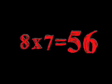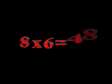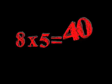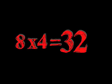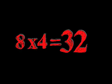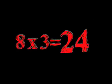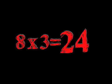Eight times nine is seventy-two. Eight times eight is sixty-four. Eight times seven is fifty-six. Eight times six is forty-eight. Eight times five is forty. Eight times four is thirty-two. Eight times three is twenty-four.